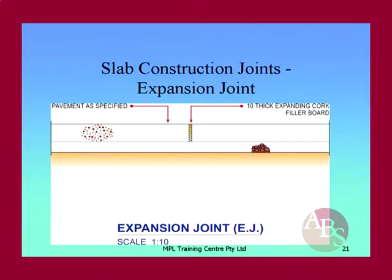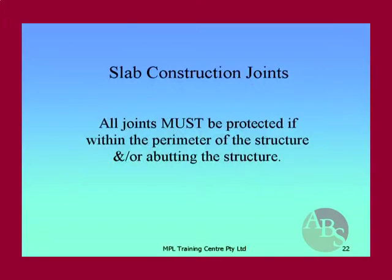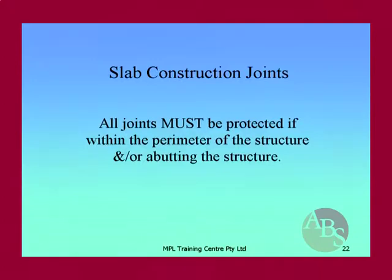Expansion joint — same products, used the same way. If it's only a joint on a concrete driveway leading up to a house, it doesn't matter so much — it depends where the expansion joint goes and whether it abuts another part of the house, leaving a gap where termites can gain undetected entry. The key thing to know about all these barriers is: all joints must be protected if they're within the perimeter of the structure or abutting the structure.